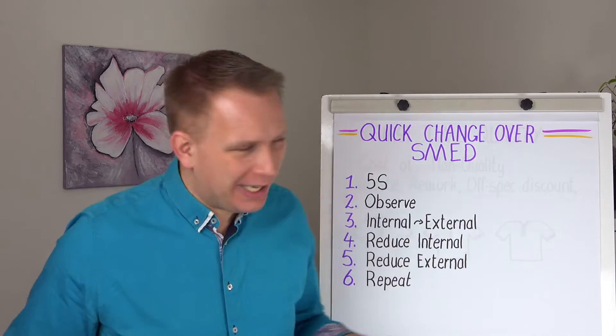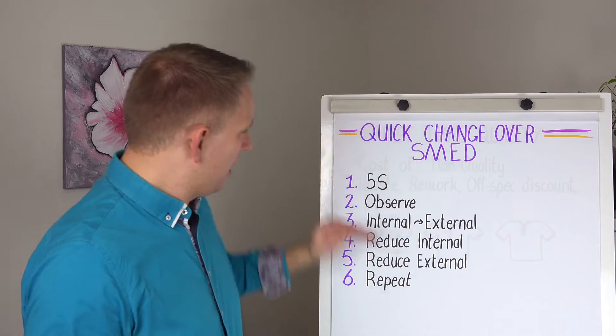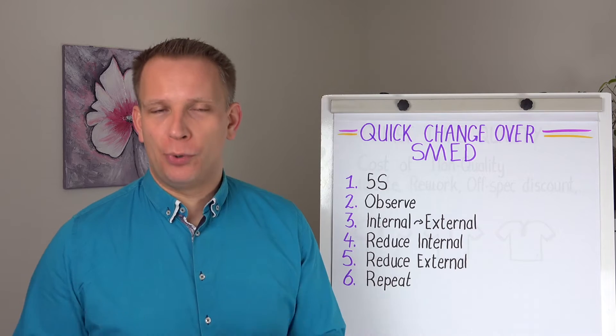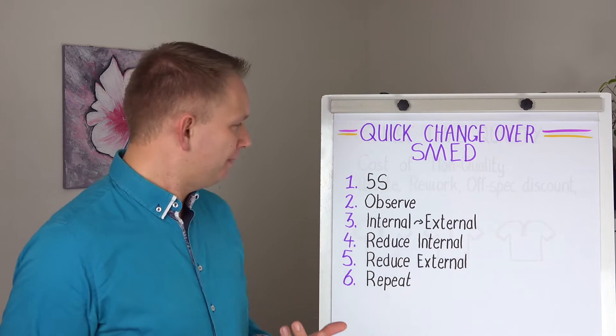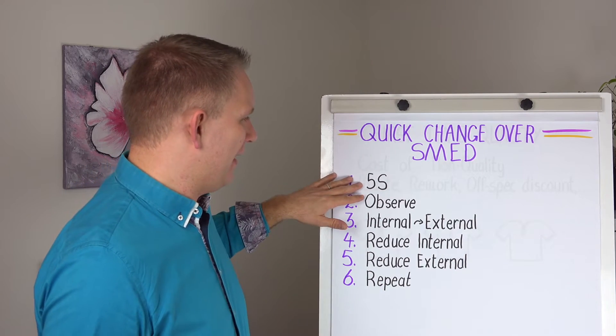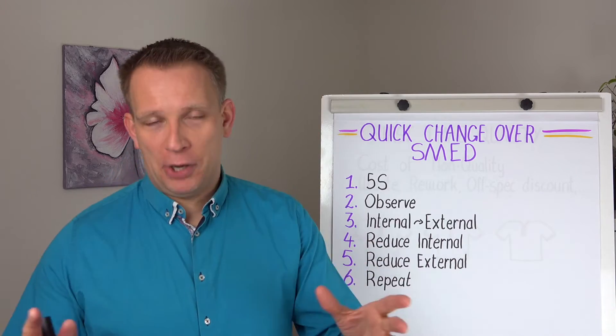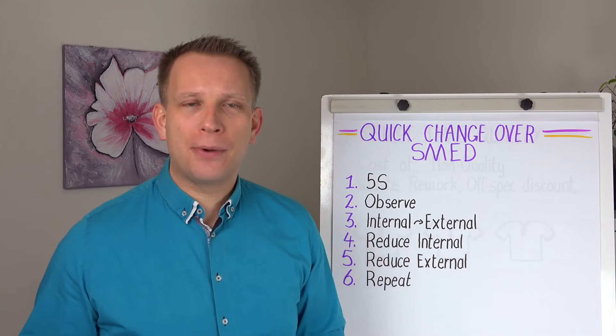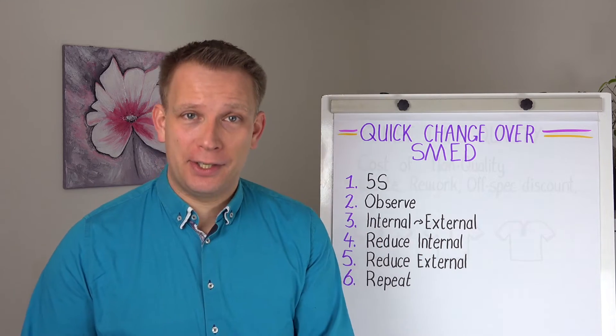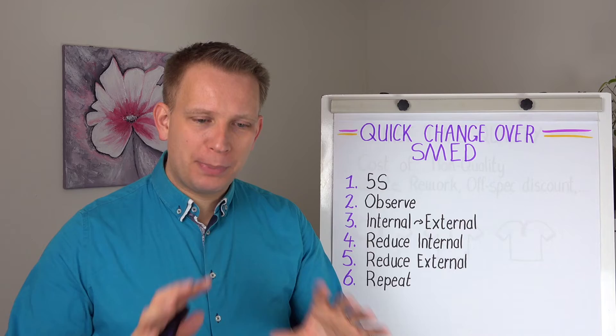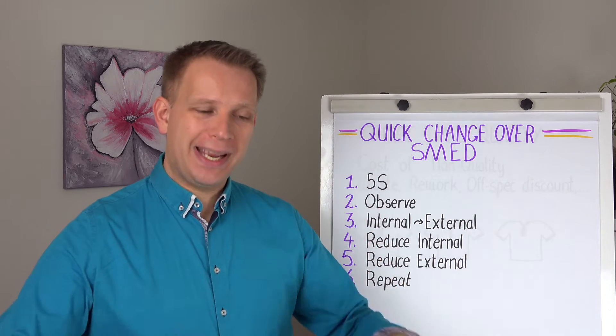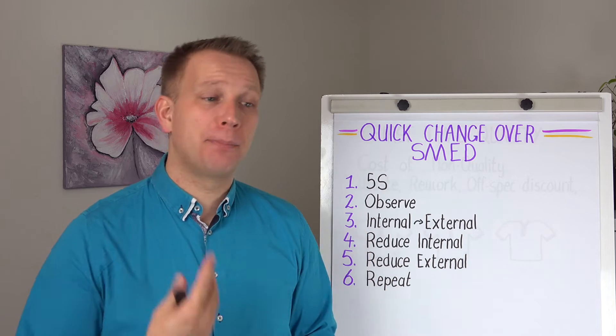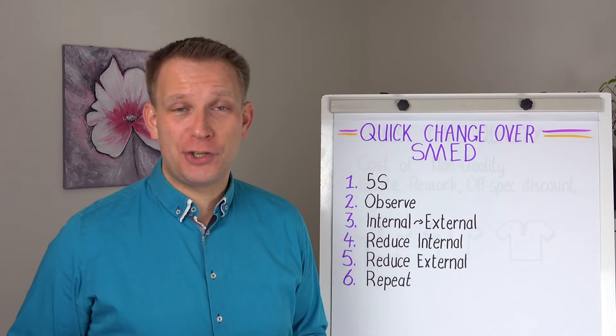But now let's get into how do we actually do that. In the textbook, so to say, there's a six step process. How you can implement this quick changeover or SMED for your production. And it starts with 5S. And 5S, I hope you know the system, but 5S is basically good workplace organization, good housekeeping, clear standards. So the workplace is just organized in a good way. And that good way, that level of organization is maintained by your operators, everyone else touching the workplace.